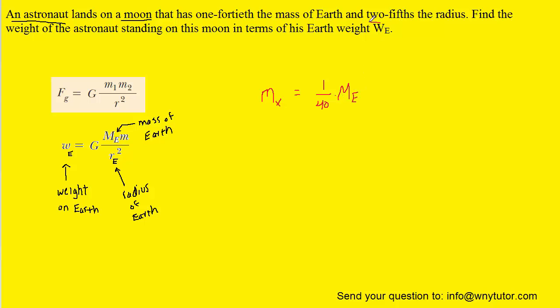We are also told that it has 2/5 of the radius. So we can say that the radius of this moon, which we'll call X, equals 2/5 times the radius of the Earth.